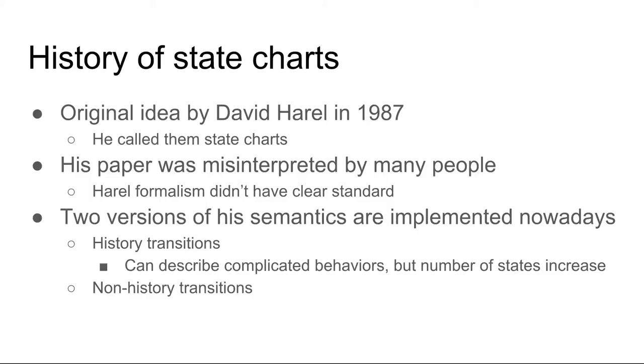History transitions can help describe very complicated behavior compactly, but the number of states can get quite large. Non-history transitions have fewer states, but describing complicated behaviors is not so optimal with this method.